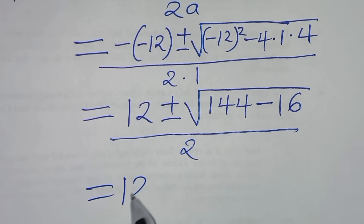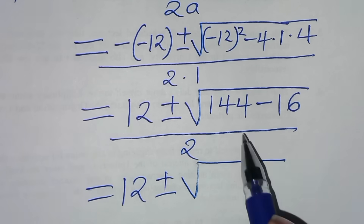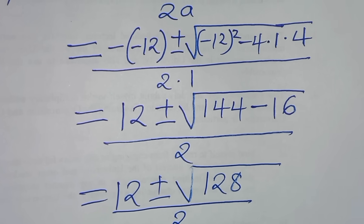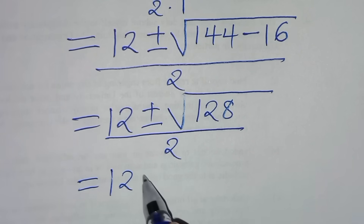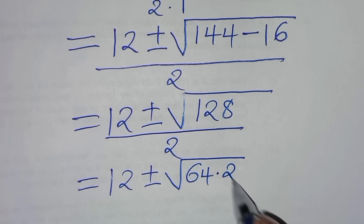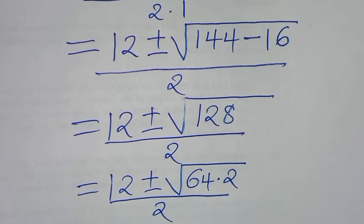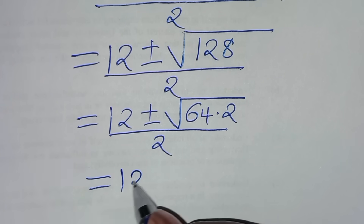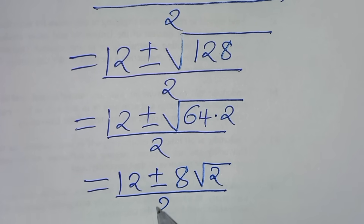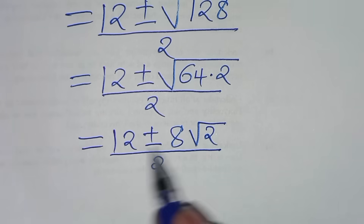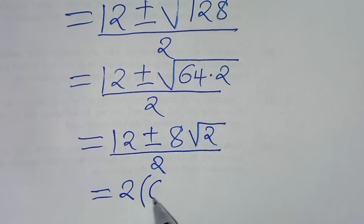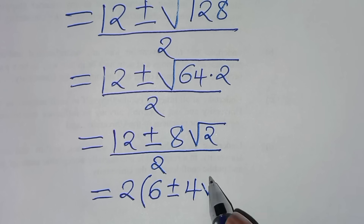So we have 12 plus or minus the square root of 128, all divided by 2. We can express the square root of 128 as the square root of 64 times 2, giving square root of 64 times square root of 2, which is 8 square root of 2. All divided by 2. We can factor out 2, so we get 2 times the quantity 6 plus or minus 4 square root of 2, divided by 2.